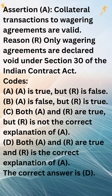Here is an example of a collateral transaction to a wagering agreement. A and B make a wager on the outcome of a horse race. C lends money to A so that A can bet on the horse race. The wagering agreement between A and B is void, but the loan agreement between C and A is valid, because the loan agreement is a collateral transaction to the wagering agreement.